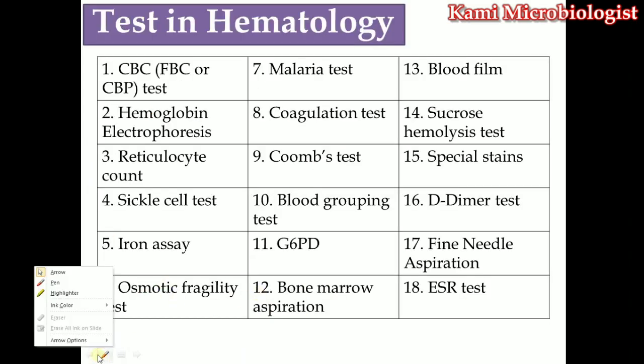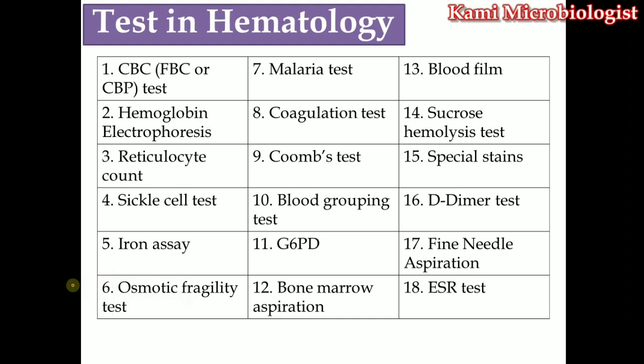Here are the important hematology tests we are going to cover. First is CBC — Complete Blood Count, also known as FBC (Full Blood Count), CBP (Complete Blood Picture), or CP (Complete Picture). Doctors may write any of these abbreviations — they all mean the same thing: we want to see the complete picture and count of the blood. We will cover CBC in detail in an upcoming video. Next is hemoglobin electrophoresis.